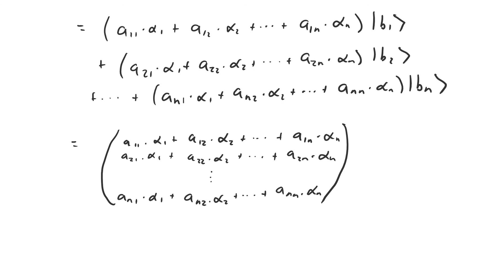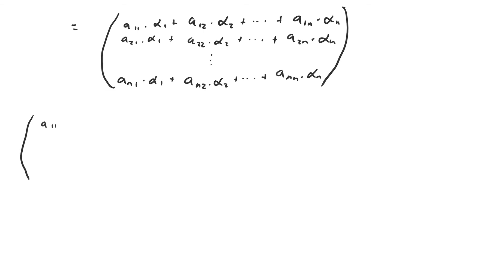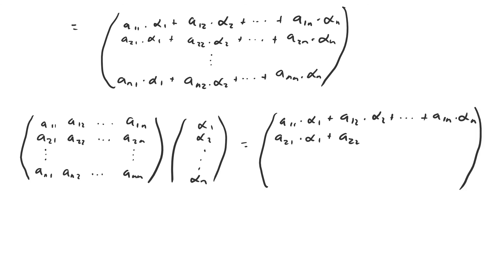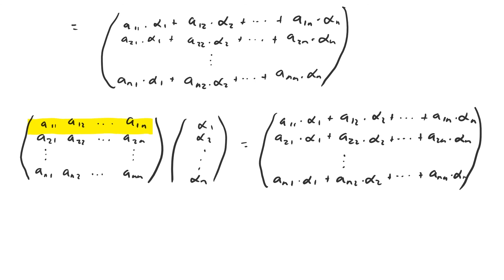So if we were to write this transformation as a column vector multiplied by a matrix, it would look like this. And we know what the resulting vector is going to be. We can see that we could also get the same resulting vector by taking the first row of the matrix and multiplying it element-wise by the column vector that represents v, and then adding all of those pieces together. That gives you the first entry in the resulting column vector.